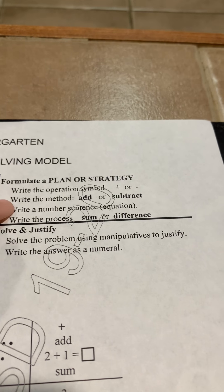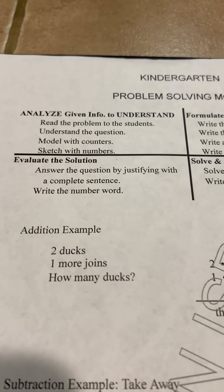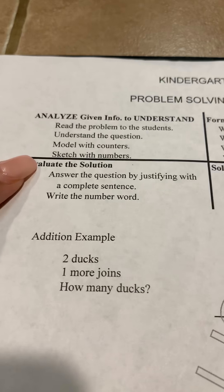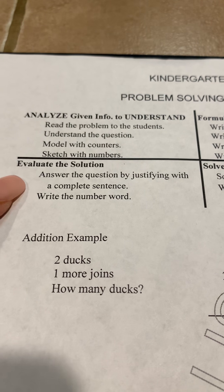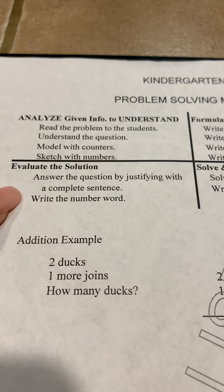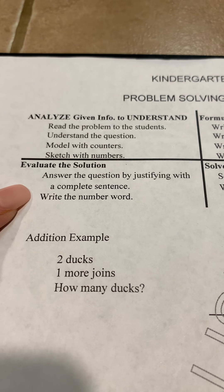After we formulate, we solve and justify — solving the problem using manipulatives. Then we write the answer as a numeral. Once we do that, we evaluate the solution by answering the question with a complete sentence or writing the number word. Since we are kinder, we will write the number word.